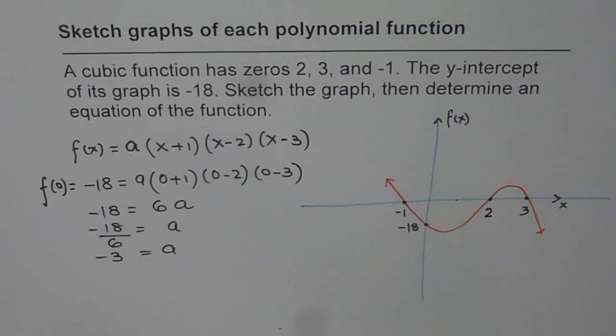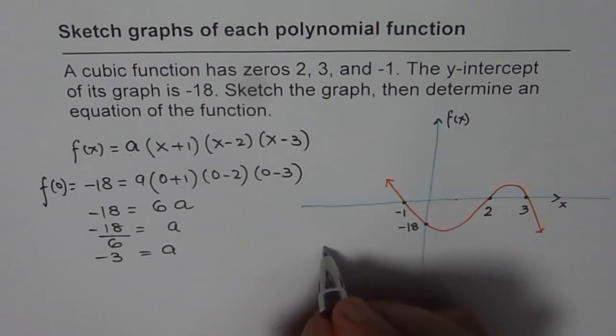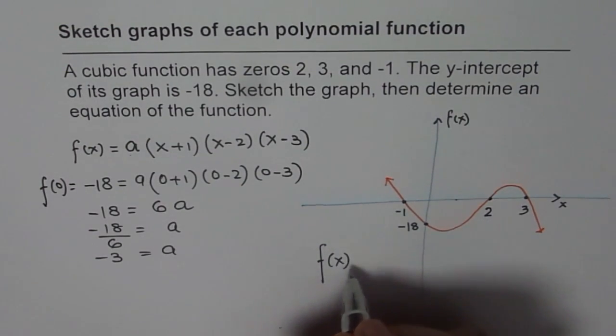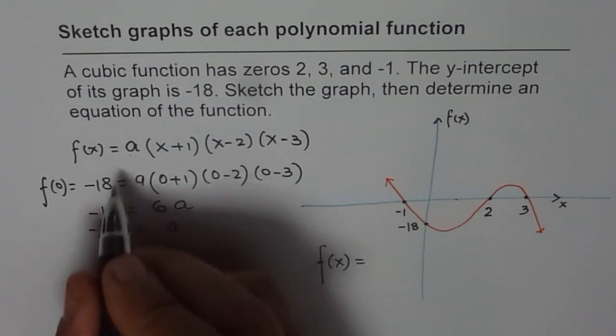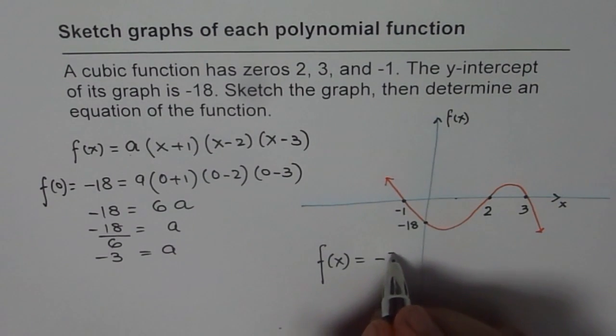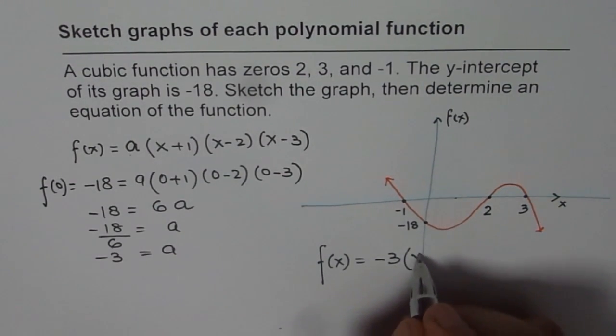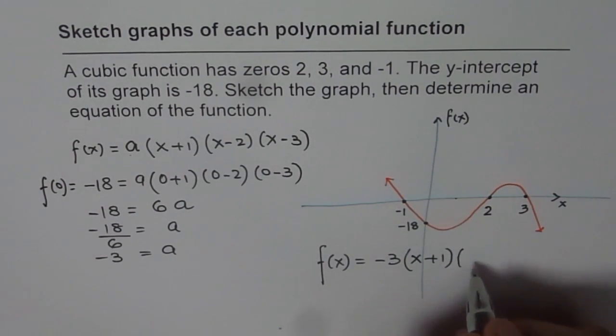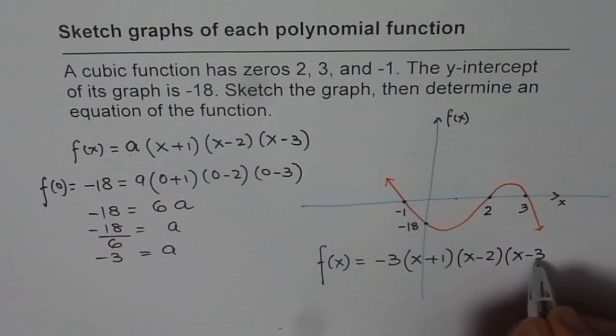we can write down the value and get the function. So, the function for us is F of X equals to, we will substitute minus 3 for A, minus 3 and the factors X plus 1 times X minus 2 times X minus 3.